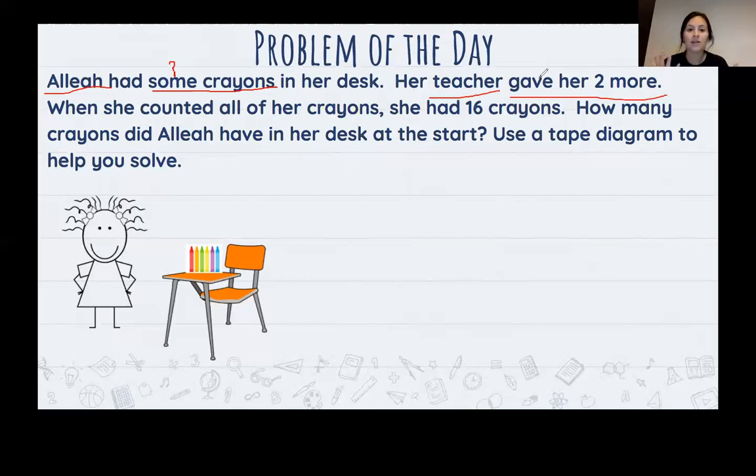She's getting them, right? So she's adding or subtracting. She's adding. Nice job. So her teacher gave her plus two more crayons. When she counted all of her crayons, she had 16. All of her crayons together made 16. So that tells me it all is going to equal the number 16.